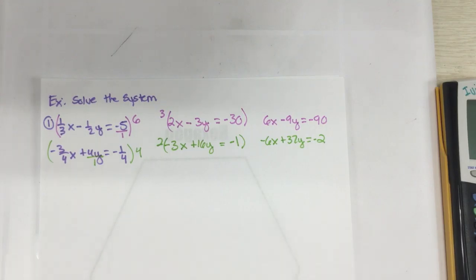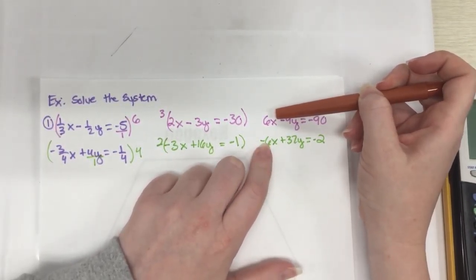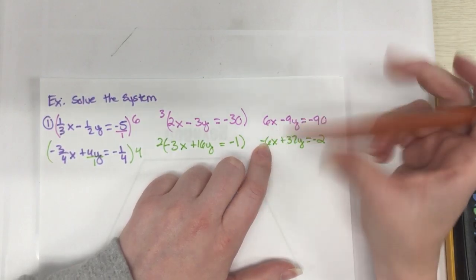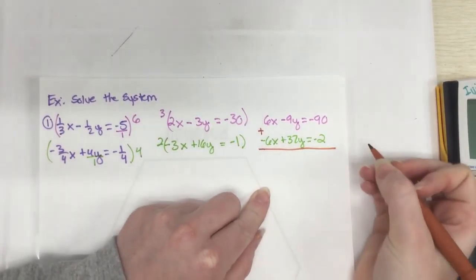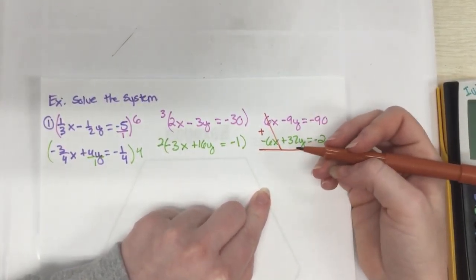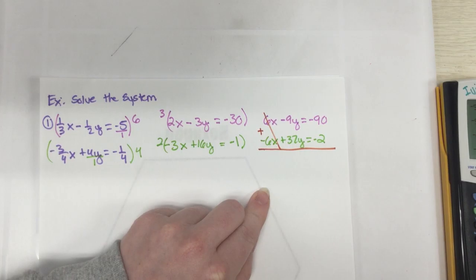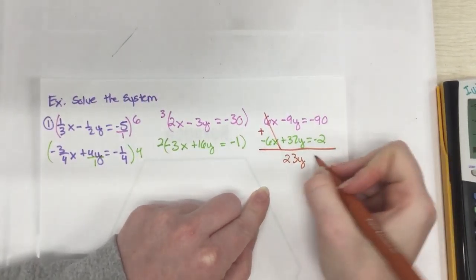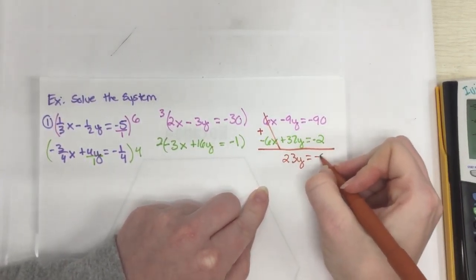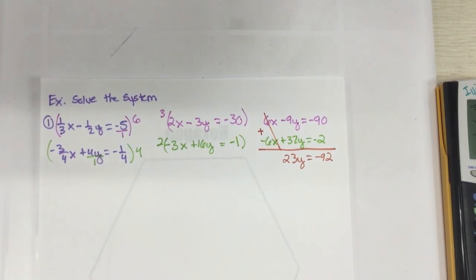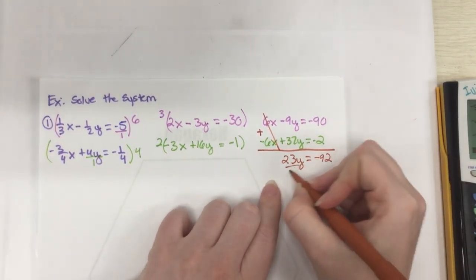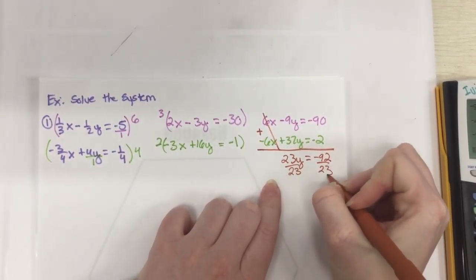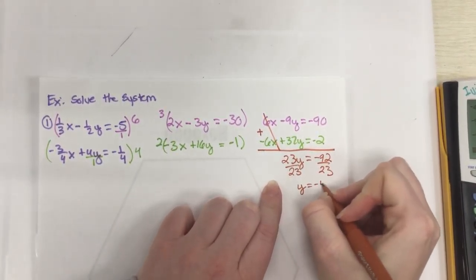And so what elimination is, after you have one variable, one's positive, one's negative, and they have the same coefficient, leading coefficient, you just add the two equations together. So we're going to add these two together. Okay, 6x minus 6x just becomes 0, so I don't care about it. And I have negative 9 plus 32, which will become a positive 23y. And then negative 90 minus 2 is a negative 92. And now I can solve this equation, because it has one variable, which is y, and I can solve for y. So I'm going to go ahead and divide by 23. Negative 92 divided by 23, and y comes out to be negative 4.